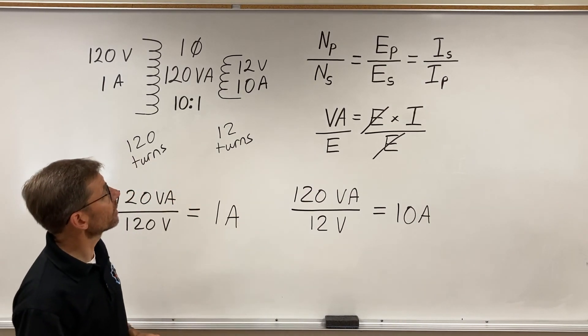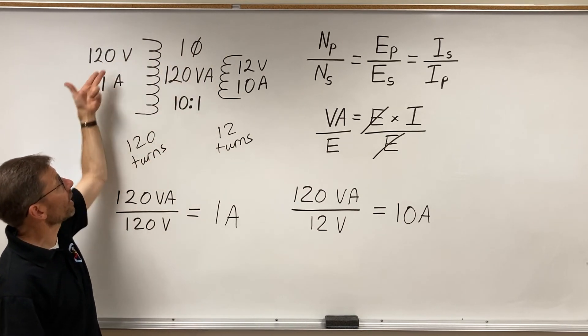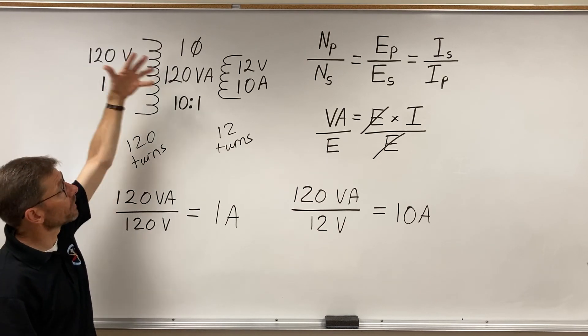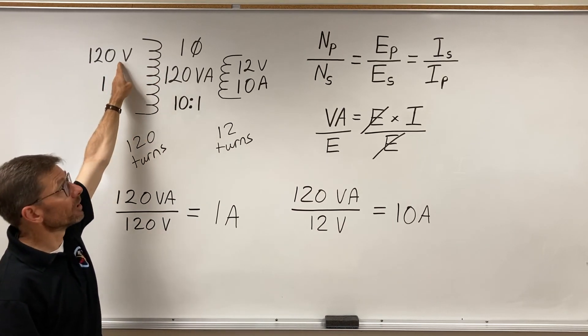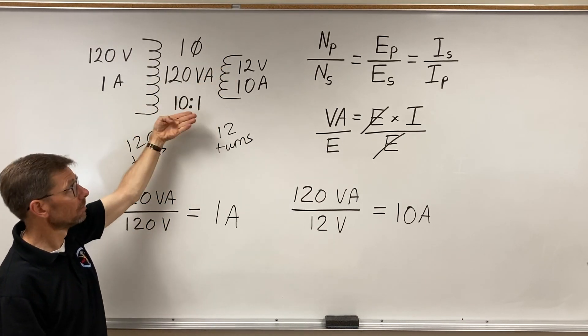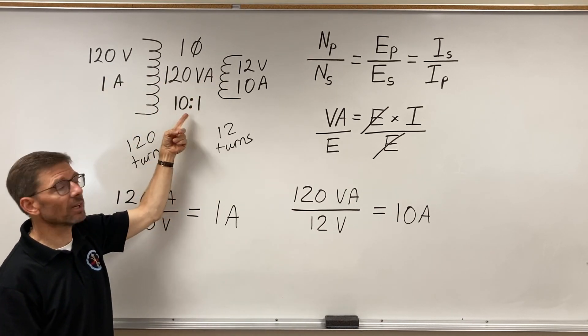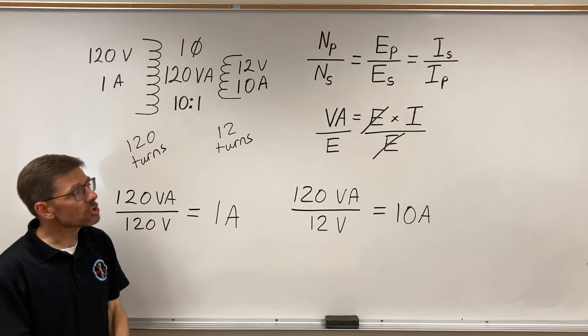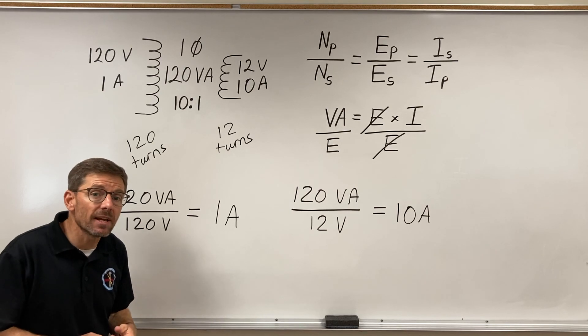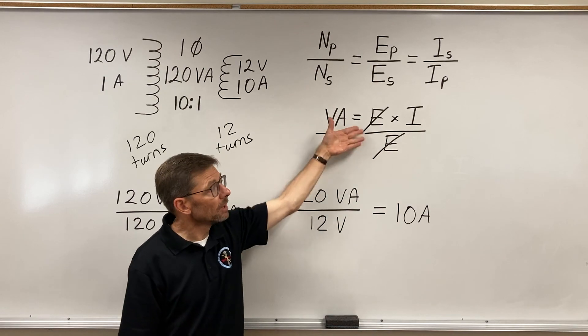So, this is how we do our basic calculations. I can be given any variety of the values. If I'm given volt amps and volts, I can figure current. If I'm given current and volts, I can figure the power. If I'm given primary voltage and secondary voltage, could you figure out the turns ratio? Sure could. 120 divided by 12. It would be 10 to 1. So, this is the basics of how we work. We're going to build on this a little bit, but when we're dealing with single-phase transformers, this is pretty much it. The ratios and the power.